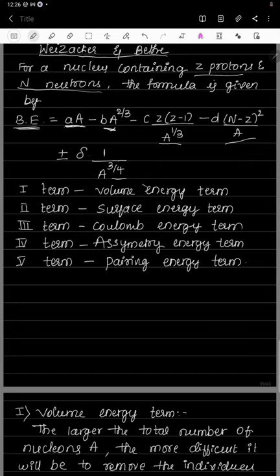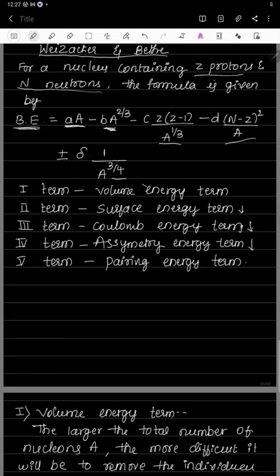The second term, b·A^(2/3), is called the surface energy term, and it decreases the binding energy. The third term, c·Z(Z−1)/A^(1/3), is called the Coulomb energy term, and it also decreases the binding energy. The fourth term, d·(N−Z)²/A, is called the asymmetry energy term, and it is also negative, meaning it decreases the binding energy.